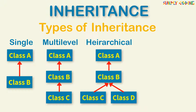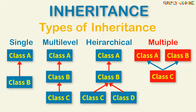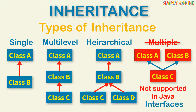You can also have hierarchical inheritance, where one class serves as the superclass for more than one subclass. In the image shown, class A serves as the base class for derived classes B, C, and D. There is also multiple inheritance, where one class can have more than one superclass and inherit features from all parent classes. However, Java does not support multiple inheritance with classes — in Java, we can achieve multiple inheritance only through interfaces.